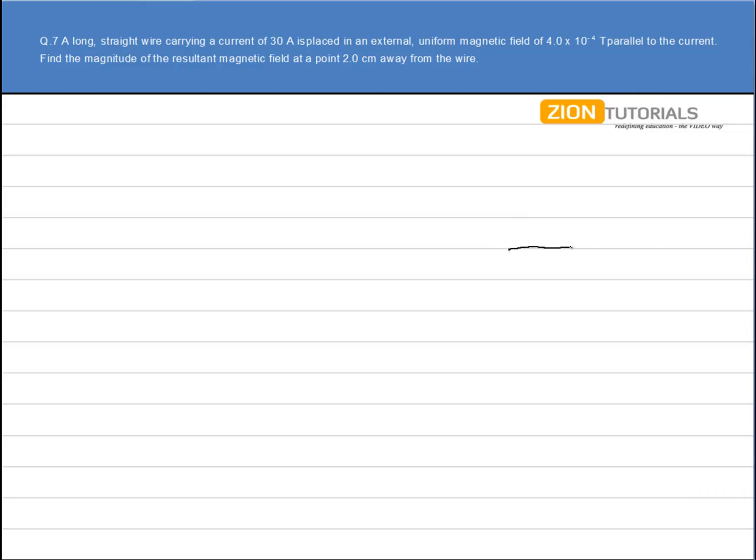Let's say this is my current carrying conductor, carrying a current I in this direction and it is given that the magnetic field is also in the same direction. The magnetic field is in this direction.